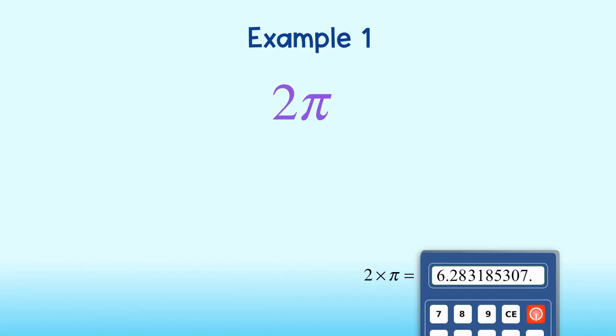Let's estimate by truncating the value to two decimal places. 2π is approximately 6 and 28 hundredths.